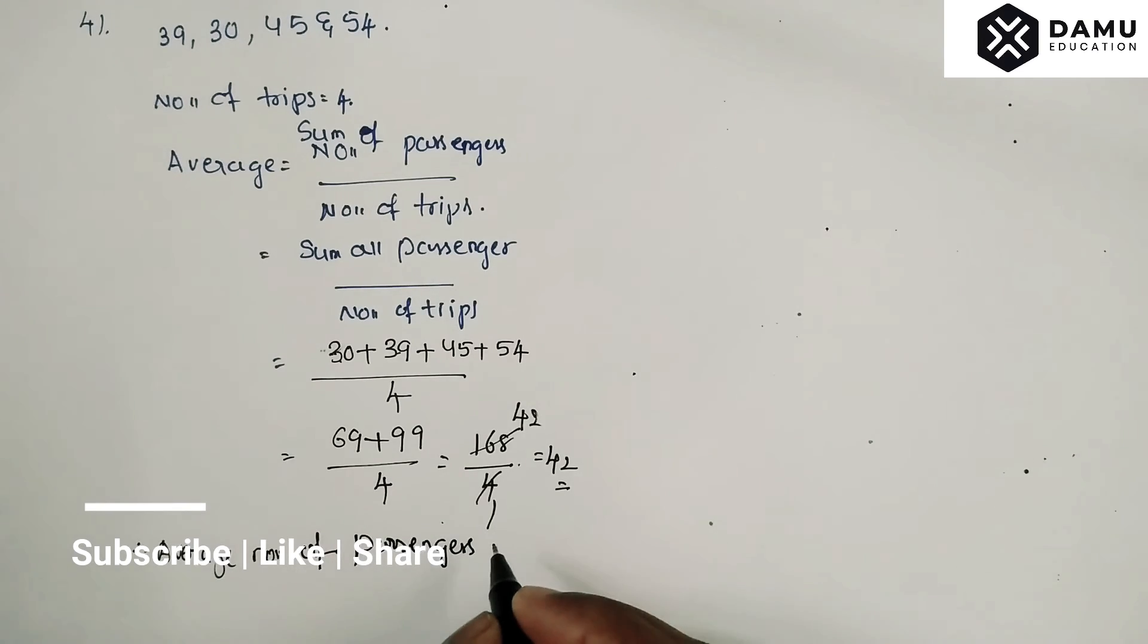Average number of passengers traveled per trip will be equal to 42.